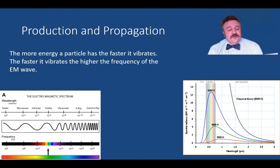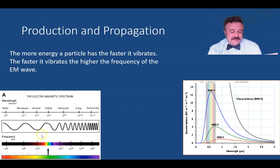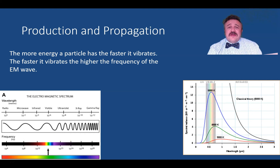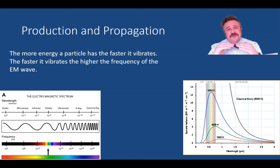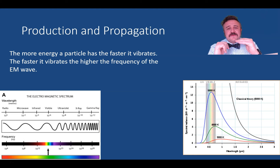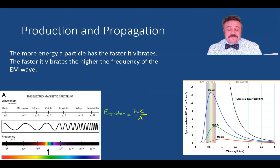The more energy a particle has, think of this in terms of temperature: the more energy it has, the more heat it gives off. That heat is infrared light. What we have is electromagnetic radiation coming off due to heat — as a particle heats up, the protons in it vibrate up and down, and the more energy they have, the faster they vibrate.